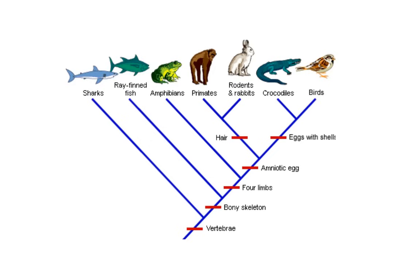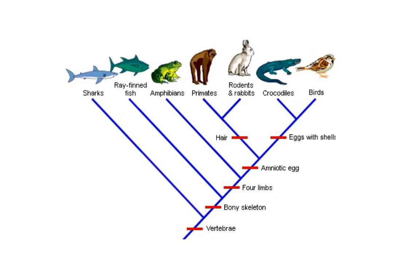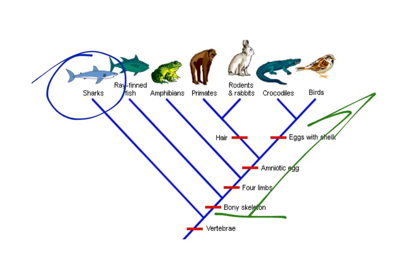We said that all of the organisms in this group have vertebrae. But if we move to the next characteristic, the next characteristic is a bony skeleton, and that is going to exclude sharks. Sharks do not have a bony skeleton — they have a skeleton made of cartilage. Therefore, they are excluded from all of the groups from here forward.